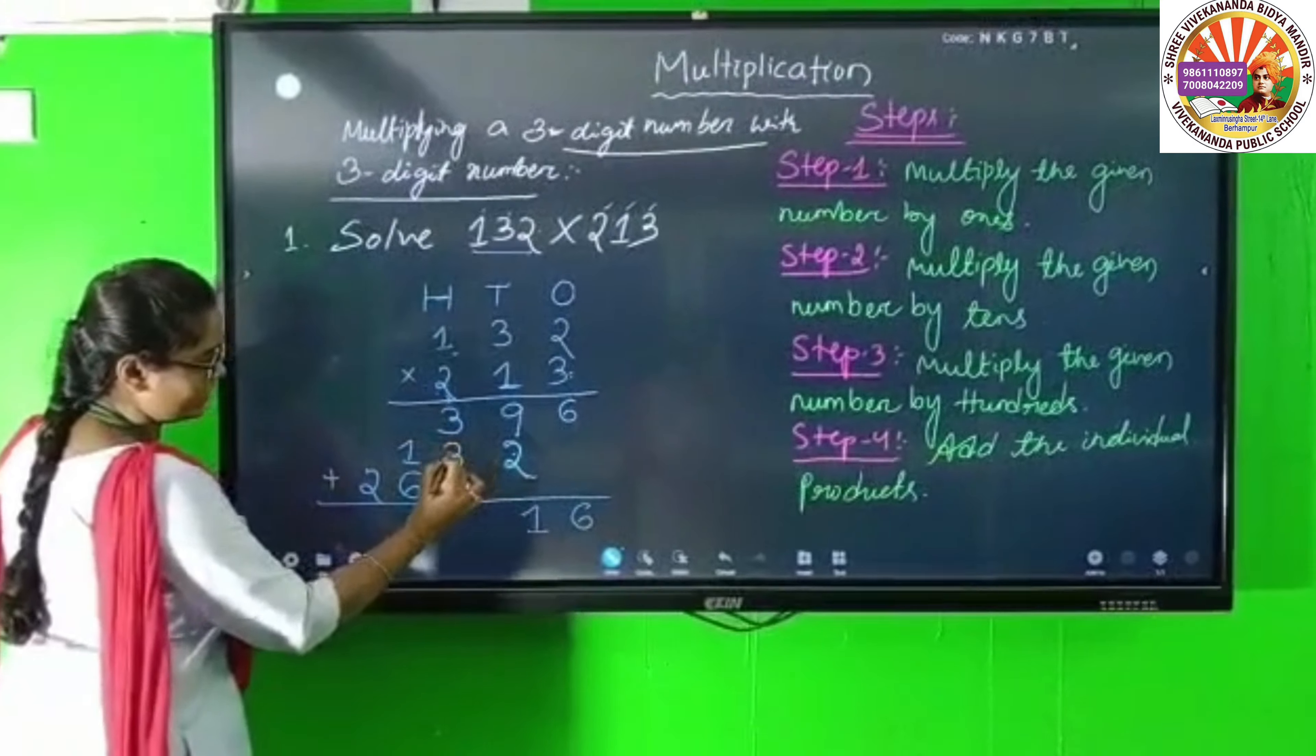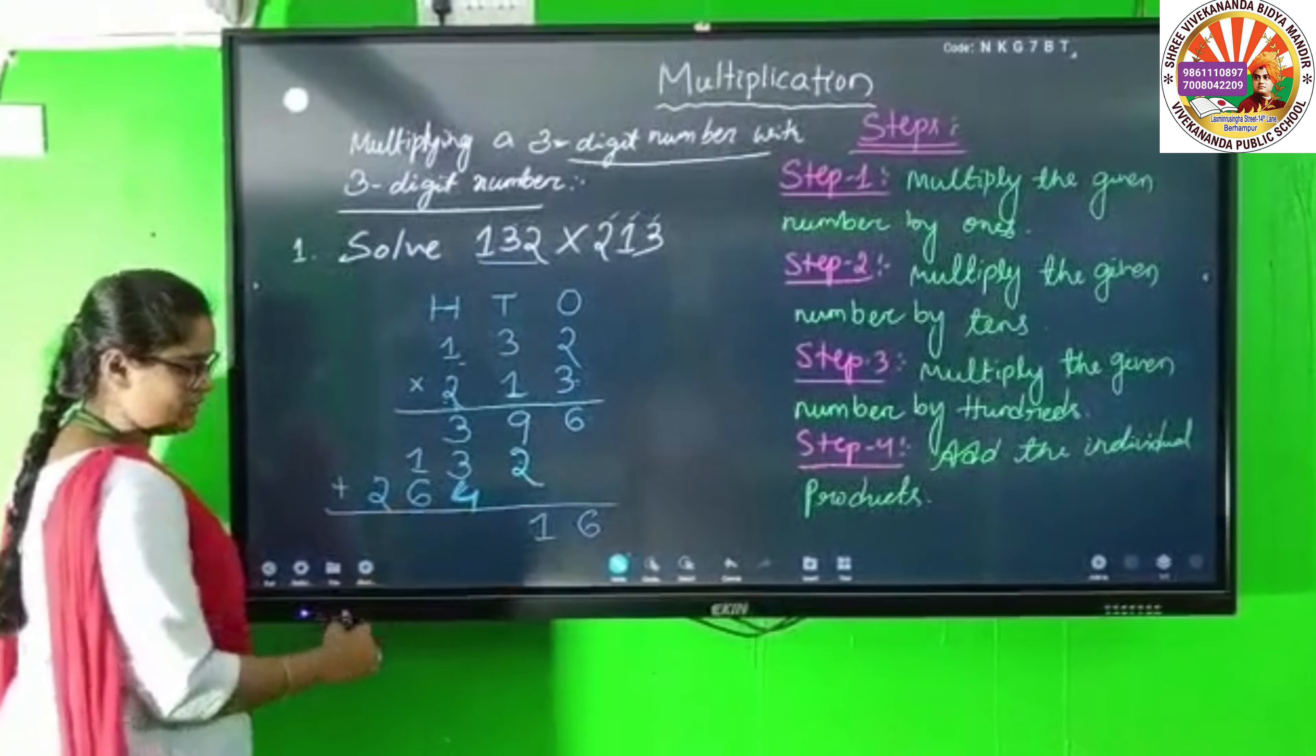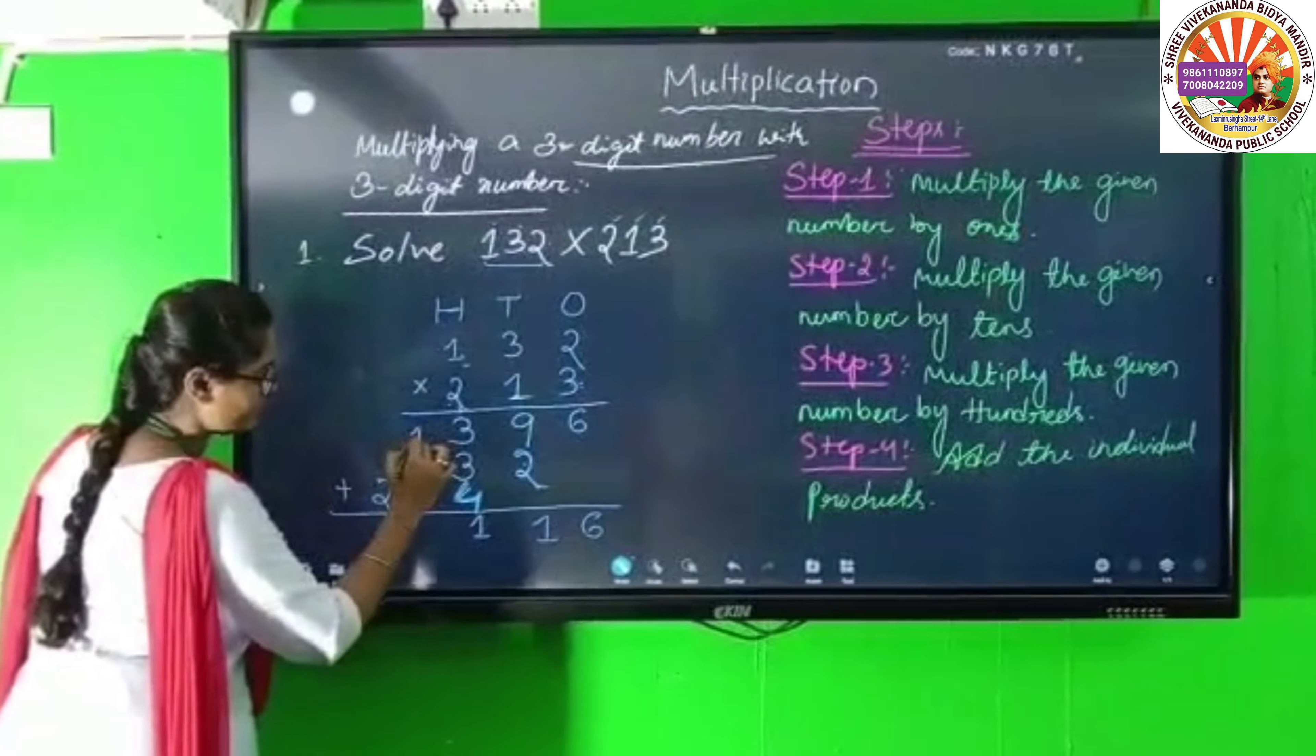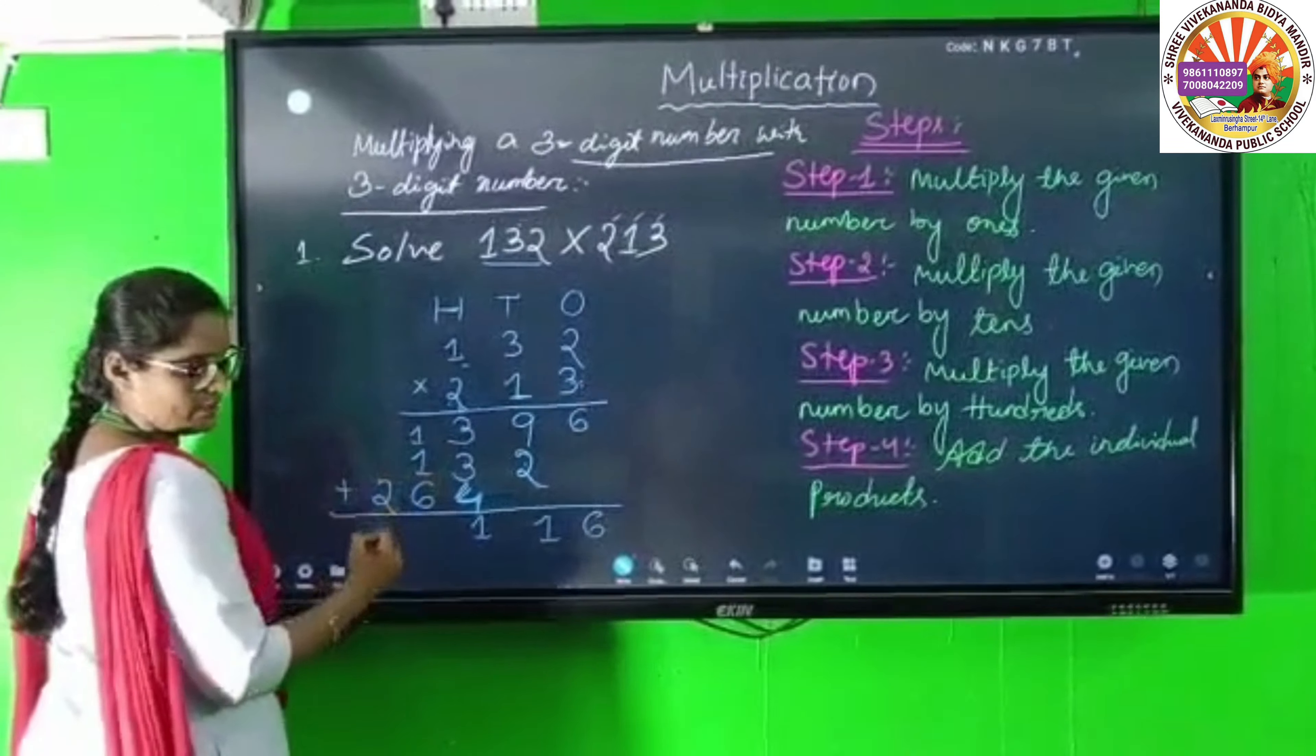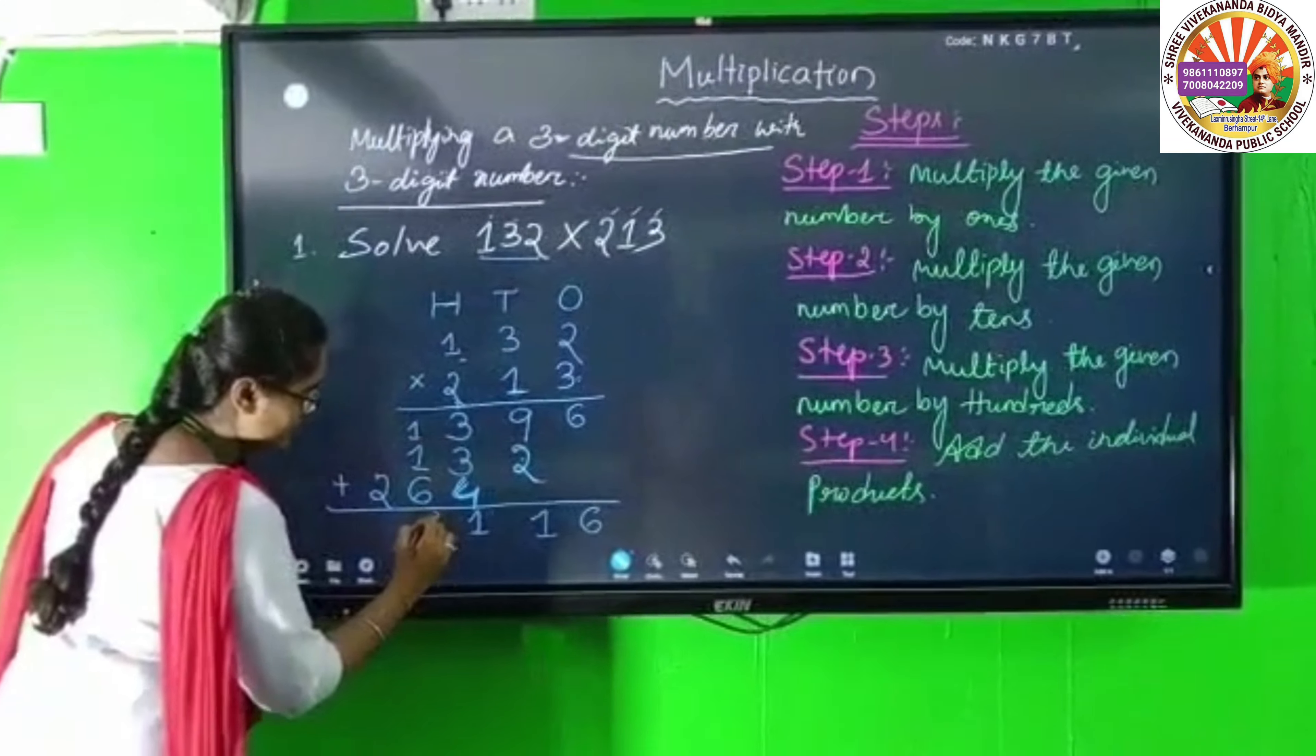Adding with carries: 1 carry, 3 plus 3 is 6, 6 plus 4 is 10, 10 plus 1 is 11. 1 carry. 6 plus 1 is 7, 7 plus 1 is 8.